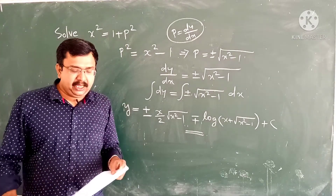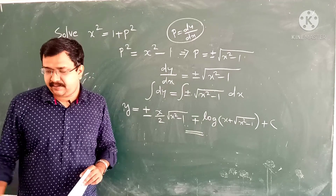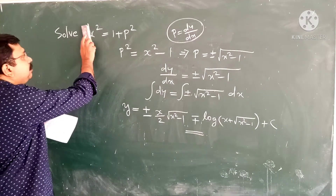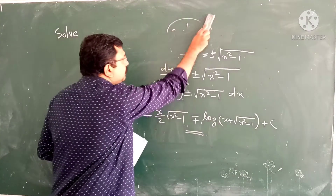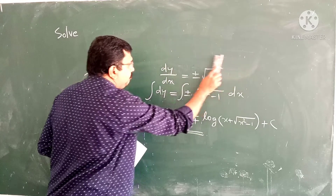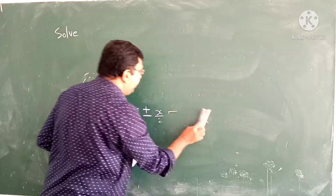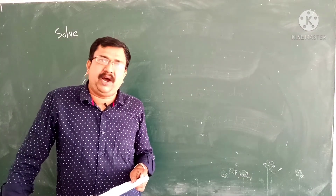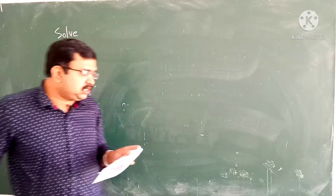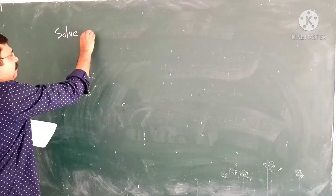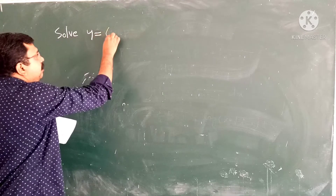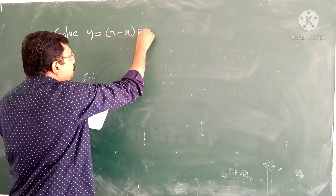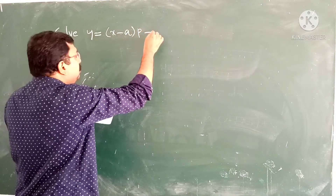We can move to our next question. Our first case was equation solvable for P. Our second case is equation solvable for Y. Our second question is: solve y equal to x minus a into p minus p square.